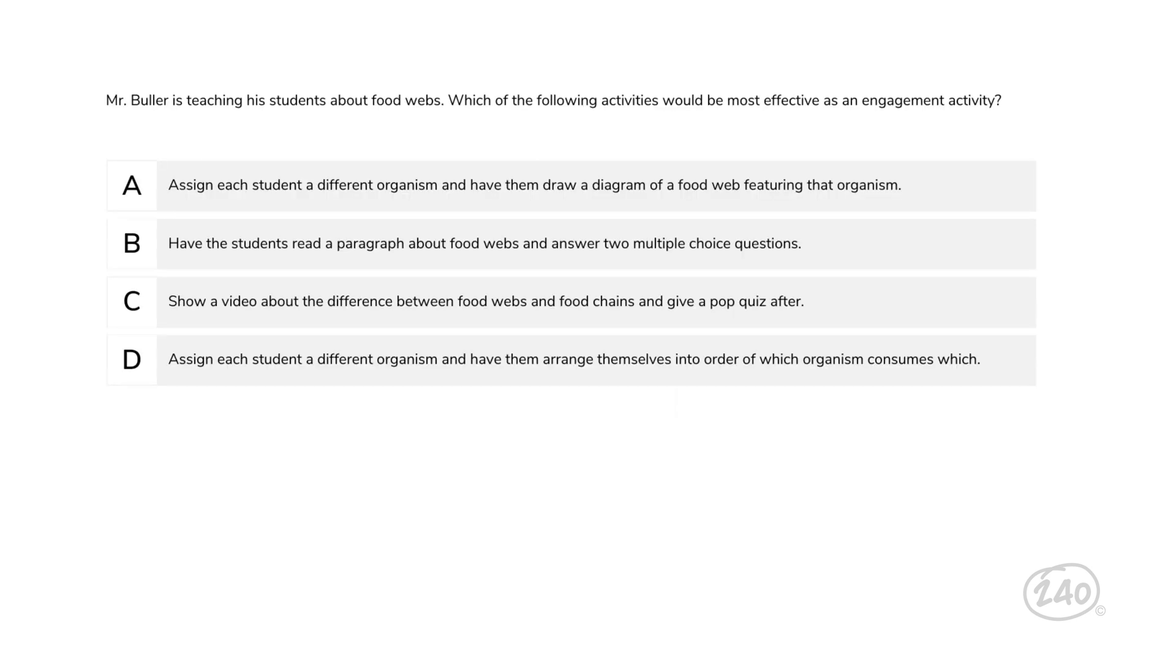Next up is domain five, interdependence of life and environmental systems. Mr. Buller is teaching his students about food webs. Which of the following activities would be most effective as an engagement activity? There's only one answer that allows students to actively participate and work with others to figure out where their organism fits in the complex feeding relationships of the ecosystem. And that answer is D. Okay, just one more.